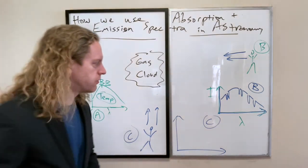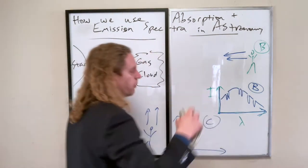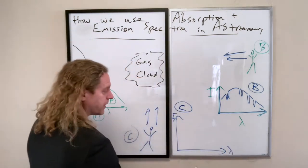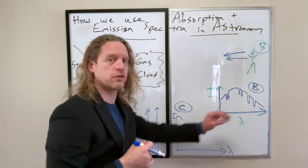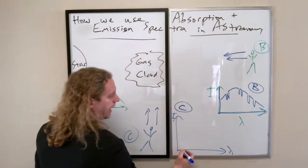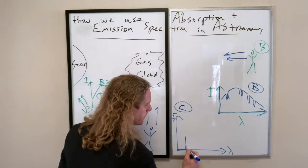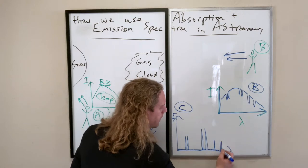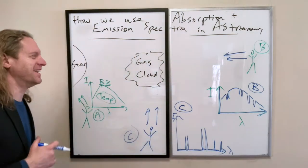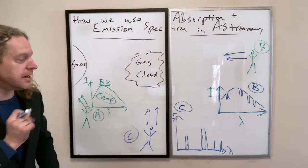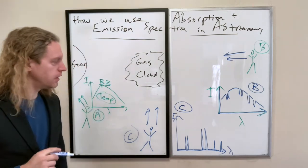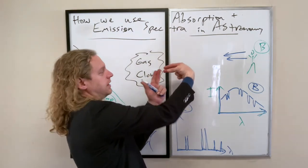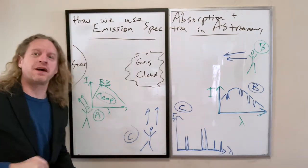Observer C sees, instead of an absorption spectrum, an emission spectrum — just a few specific bright lines and nothing at either side. So person B clearly sees an absorption spectrum, and person C clearly sees an emission spectrum. Importantly, each of these two observers is looking at the same thing, but from a very different perspective relative to the star.